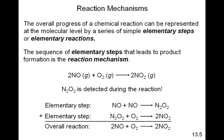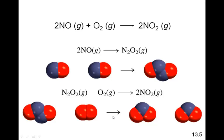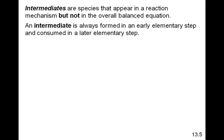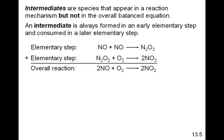The overall reaction is the reaction up above in which we can cancel out the N₂O₂. The N₂O₂ in this has a special name as we cancel those out — it's called an intermediate. We see that the N₂O₂ is a product in an earlier step and a reactant in a later step, which makes this an intermediate. Intermediates are species that appear in a reaction mechanism but not in the overall balanced equation. An intermediate is always formed in an early step and consumed in a later step. The N₂O₂ was produced in an earlier step and then consumed in a later step.